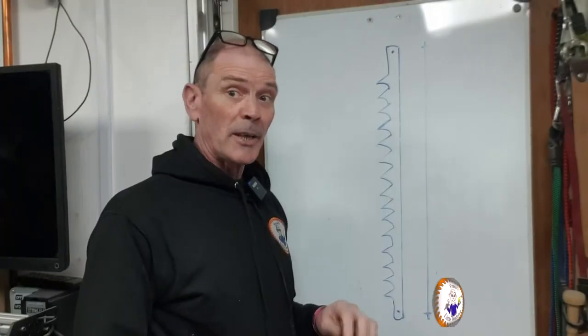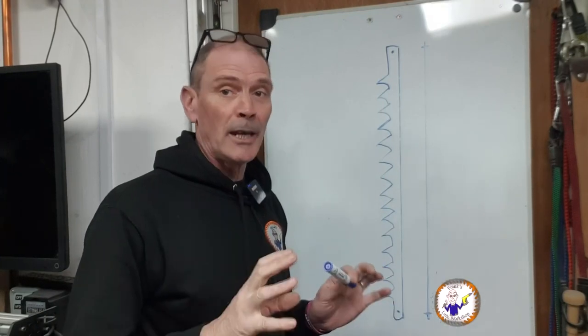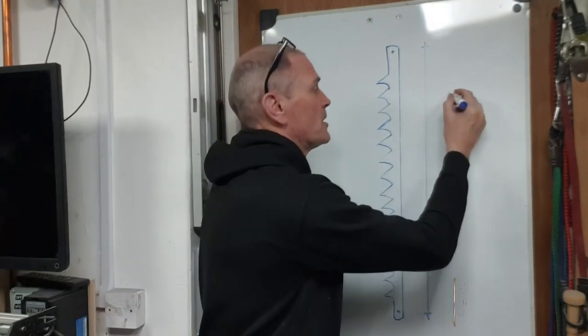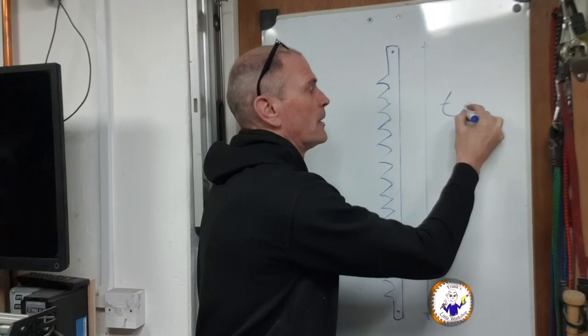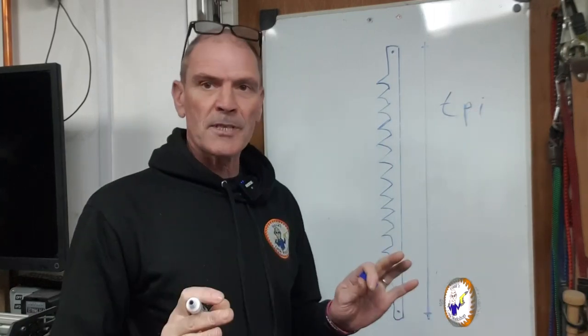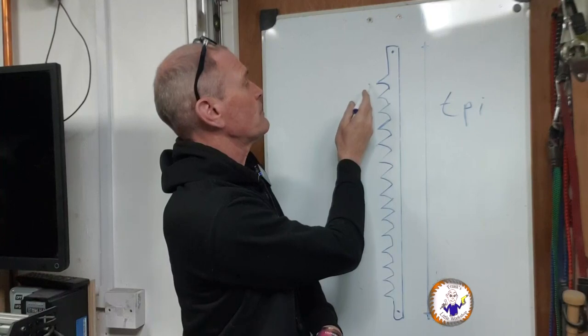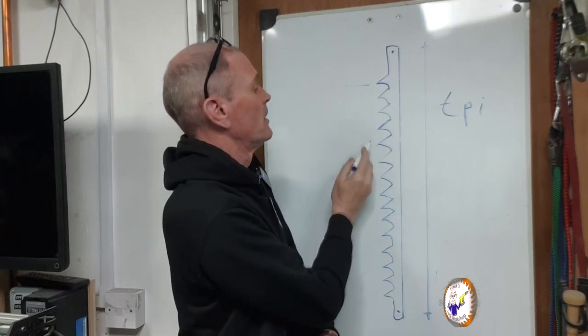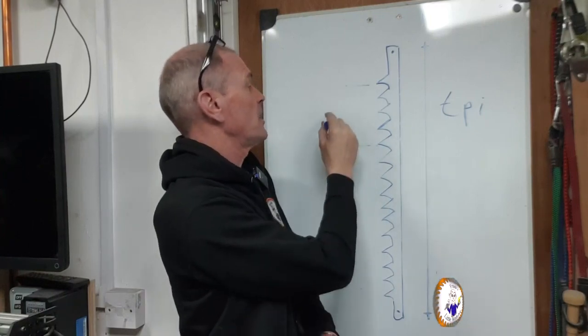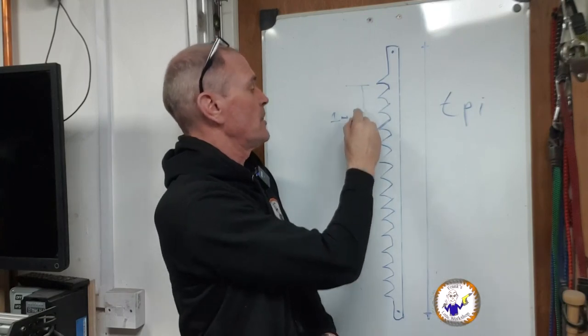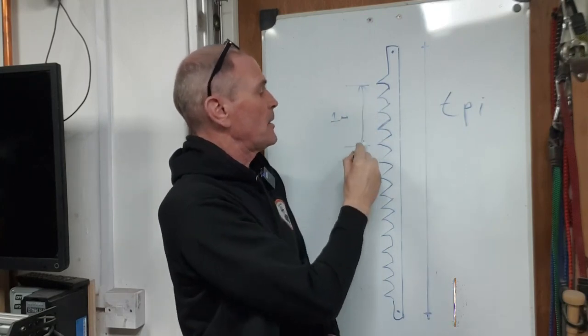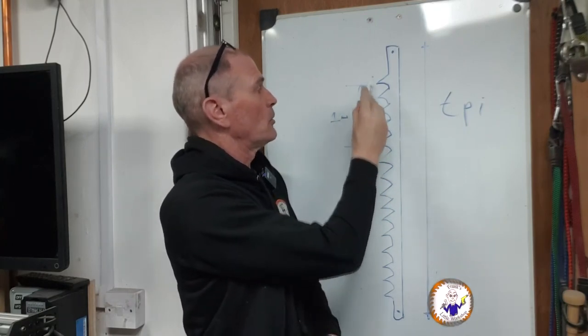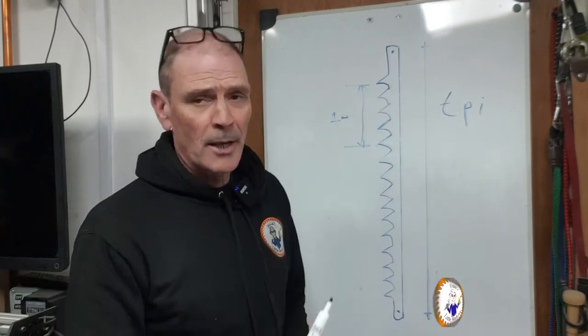The blade you want to get is normally shown in TPI, which is teeth per inch. What does that mean? That means that for every inch—if we measured an inch from there to there—how many teeth? One, two, three, four, five. Five TPI.